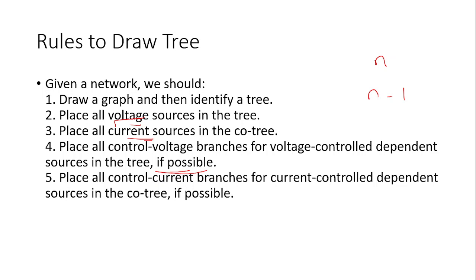To summarize the rules: voltage sources must be in the tree; current sources must be in the co-tree. Dependent voltage sources should be kept in the tree if possible; dependent current sources should be kept in the co-tree if possible.